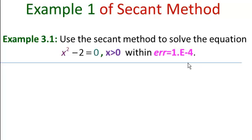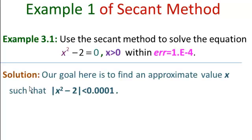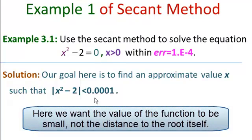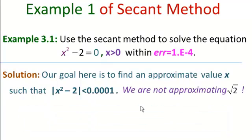Now this is different than the problem we solved using the bisection method that had the same function. Our goal is to find an approximate value of x such that the absolute value of x squared minus 2 is less than 10 to the minus 4. We want the value of the function to be small, not the distance from the root itself. Here we are not approximating the square root of 2. We're approximating x squared minus 2.